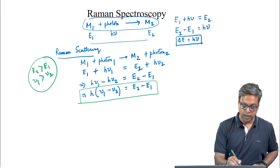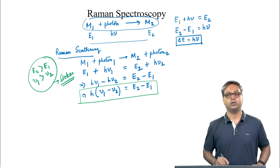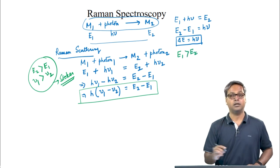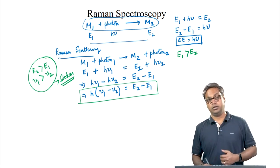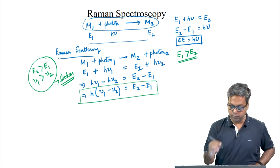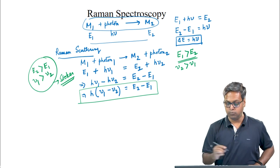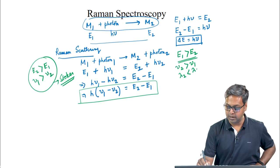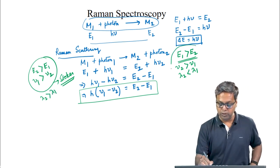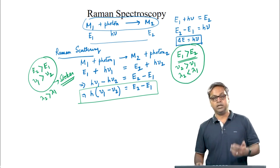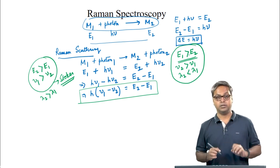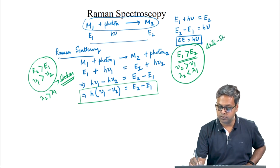In this case we get the Stokes lines. When we have the opposite case, that is E₁ is greater than E₂, the frequency of the scattered radiation will be greater than that of the incident radiation. Because E₁ > E₂, ν₂ will be greater than ν₁, so λ₂ is less than λ₁. In the first case we had λ₂ greater than λ₁. In this case where E₁ > E₂, the wavelength of the scattered light is lower than the wavelength of the incident light, and thus we get the anti-Stokes lines.